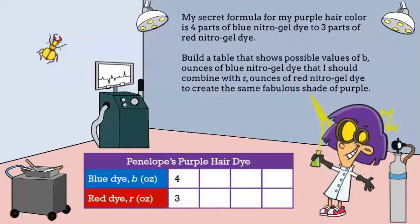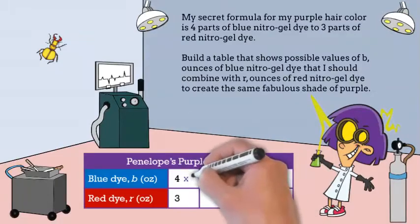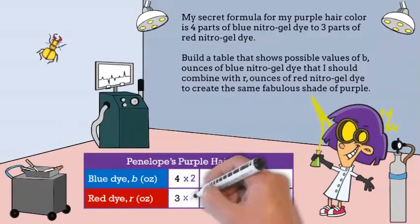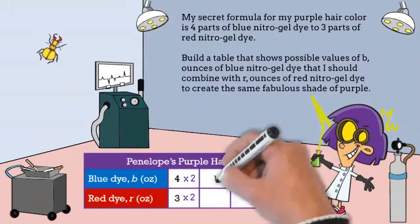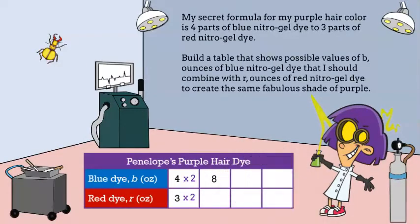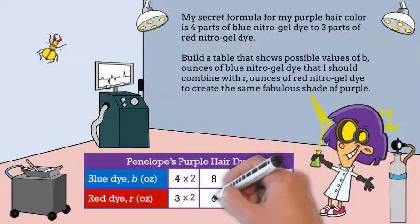Excellent start. Now if we want to expand the table, we simply take the numerator and denominator and multiply them both by two. What did you get? That's right, you get eight over six.